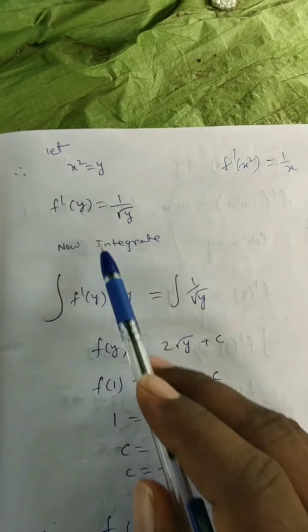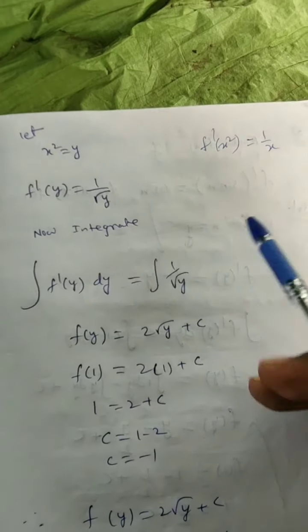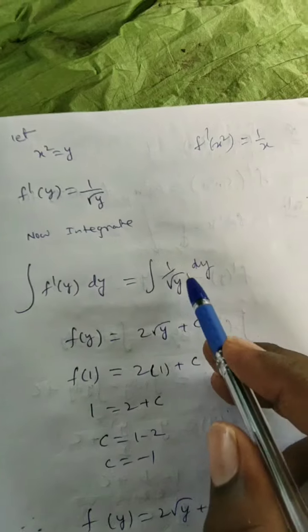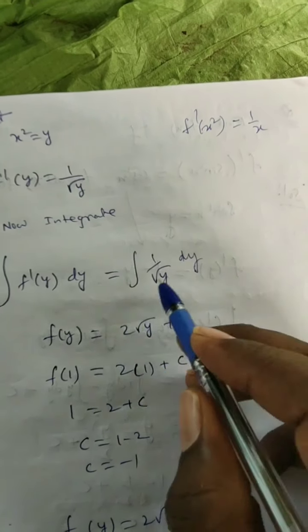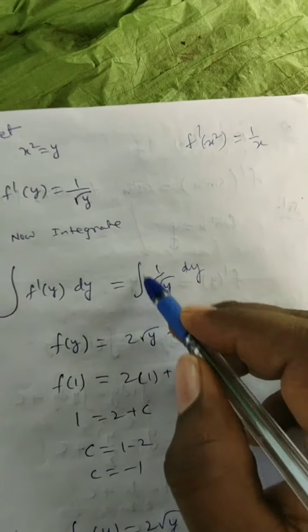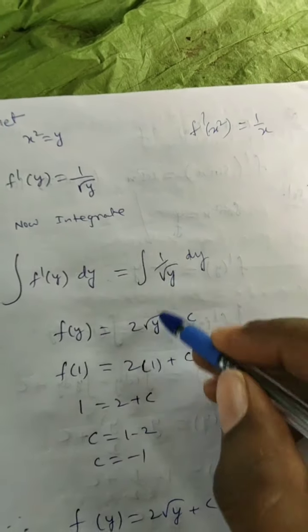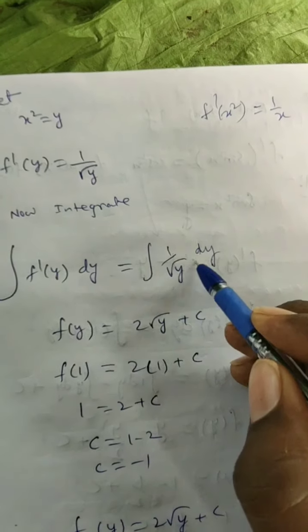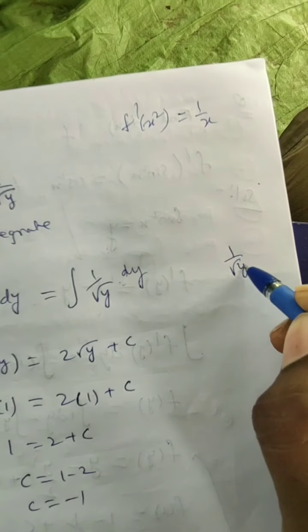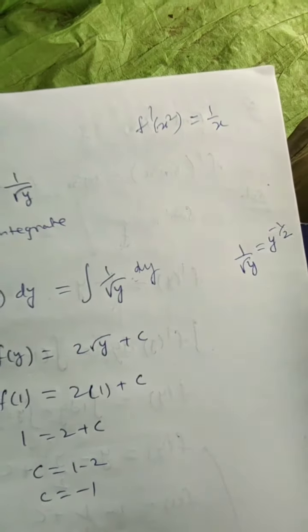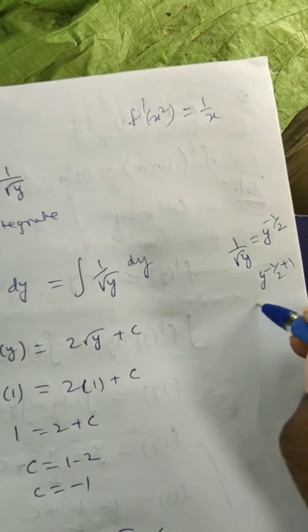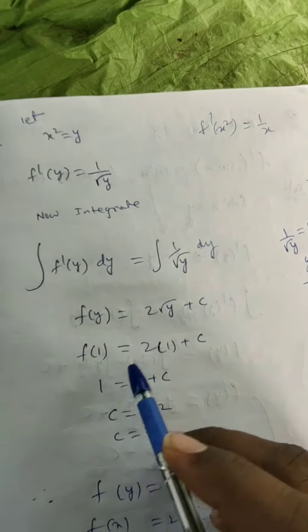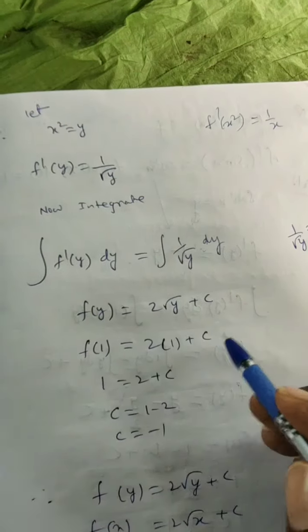Now integrate both sides: ∫ f′(y) dy = ∫ 1/√y dy. The left side gives f(y). For the right side, 1/√y = y^(−1/2), so integrating gives y^(1/2)/(1/2) = 2√y. Therefore f(y) = 2√y + c.